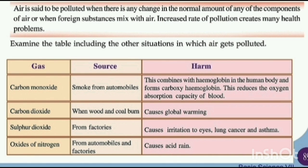When wood and coal burn, carbon dioxide is produced, which causes global warming. Sulfur dioxide comes from factories and causes irritation to eyes, lung cancer, and asthma. Oxides of nitrogen come from automobiles and factories and cause acid rain.